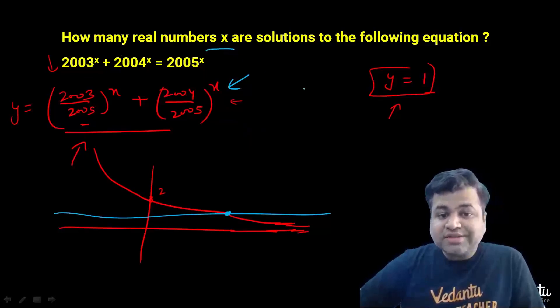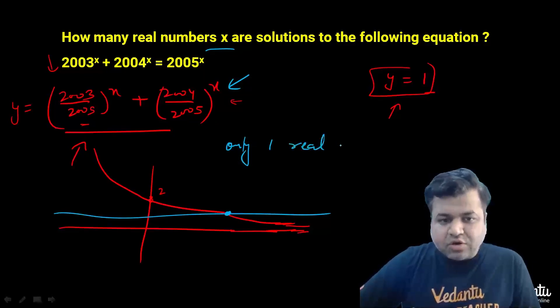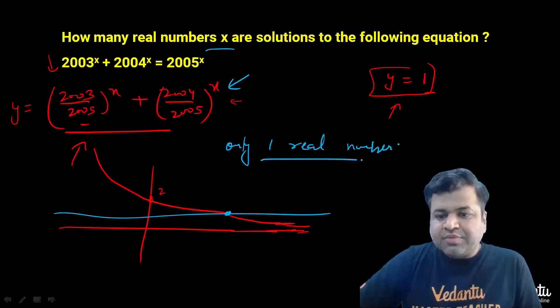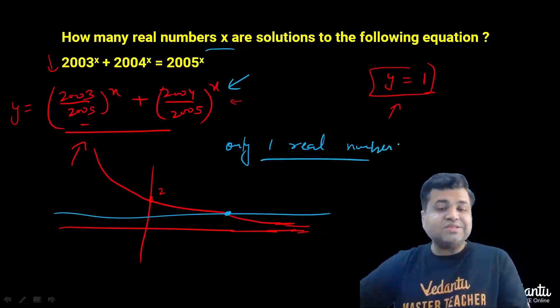So how many real numbers x are possible? The answer will be 1 real number, and that will also be a positive number.